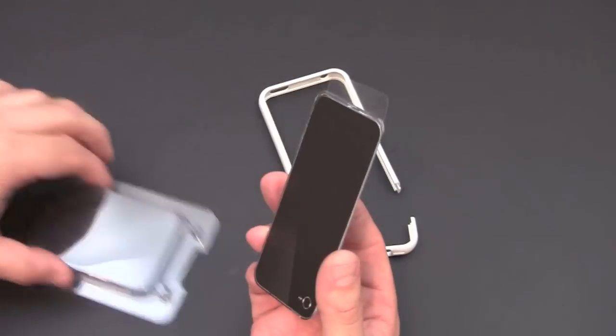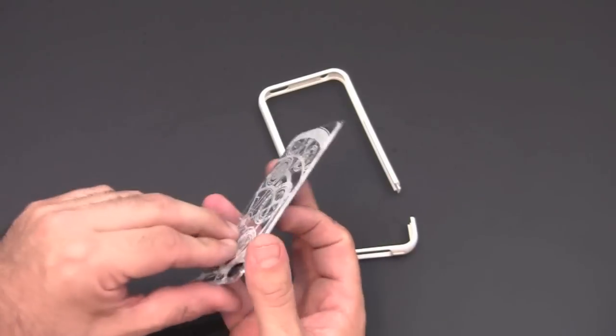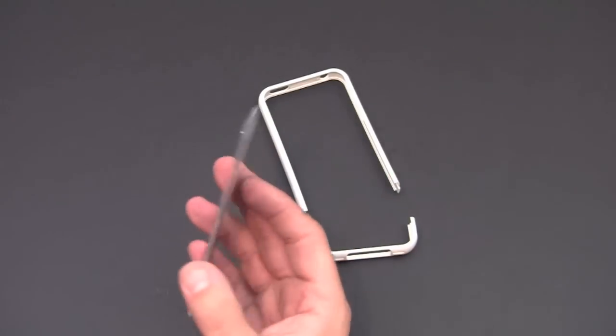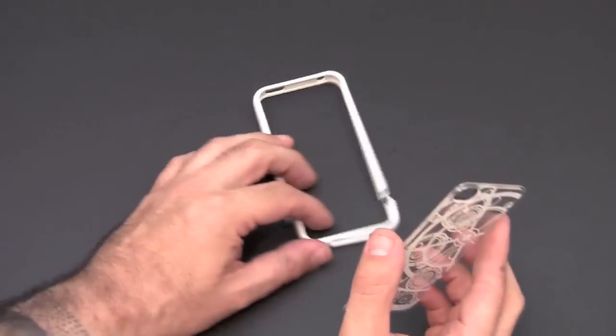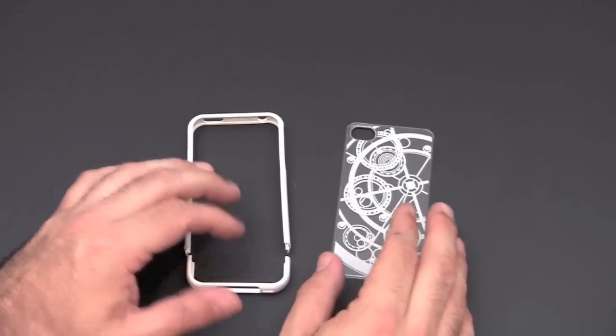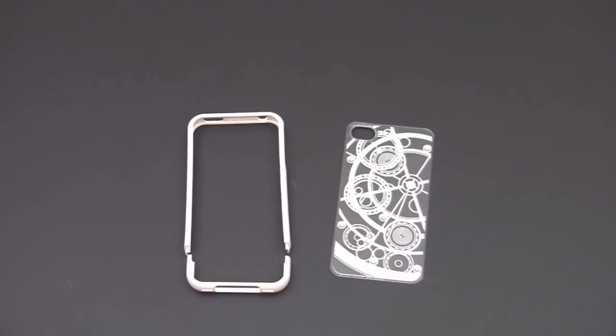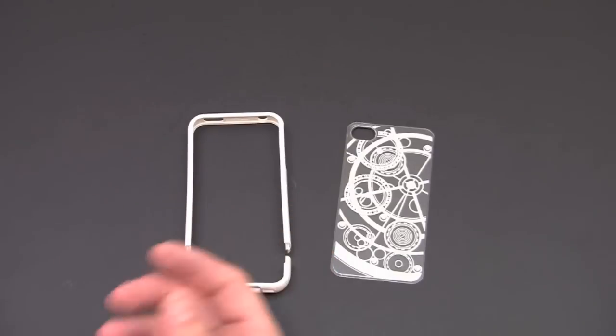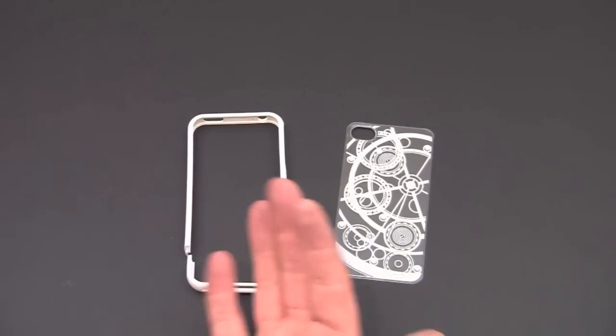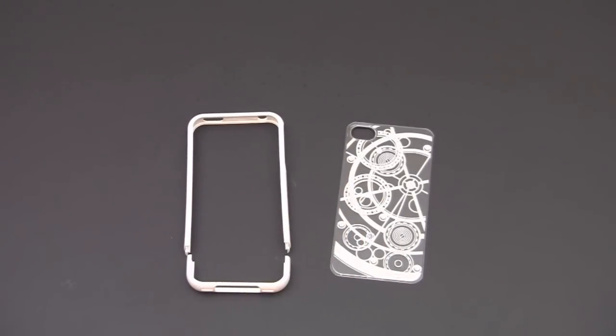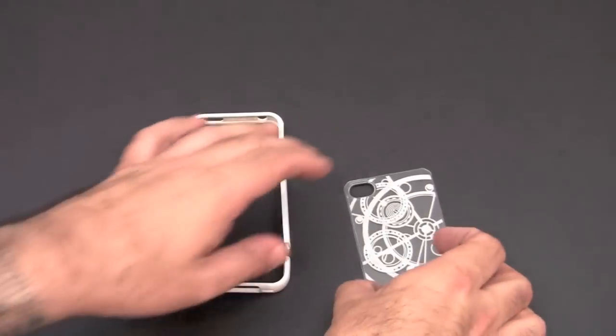Let me get all this stuff out of the way. Essentially, if you haven't seen the Linear case before, it consists of a backplate and a frame. What makes this so cool is all this stuff is interchangeable. Not that you'd necessarily want to interchange the pieces of the Clockwork case, but look for some reviews coming up that showcase how all the different pieces of the Linear Series can be interchanged.